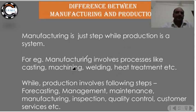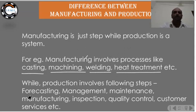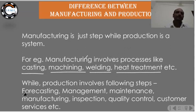Manufacturing involves specific processes like casting, machining, welding, and heat treatment. Production, on the other hand, involves many steps such as forecasting — making a market survey to judge how much the product will sell before beginning manufacturing of any component.